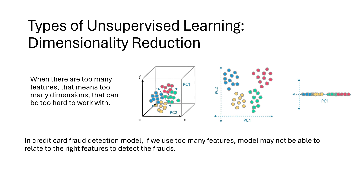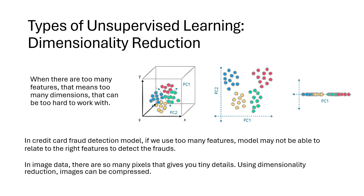Take the example of a credit card fraud detection model. If you have too many features, the model may not be able to relate to the right features to detect fraudulent activities. In those cases, if you compress the features into a smaller dimension, it will be easier to establish the relationship between features and the target variable, and the prediction will be more accurate.